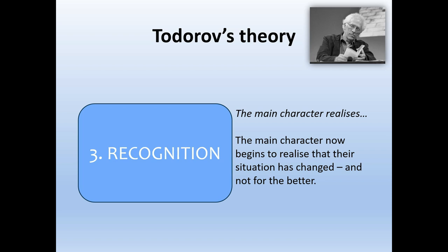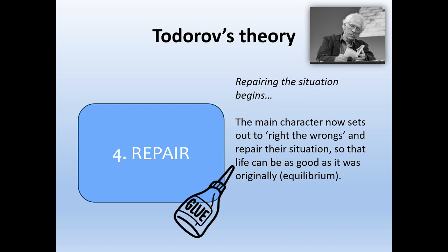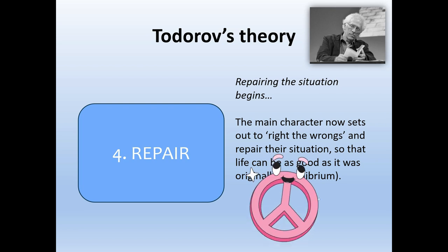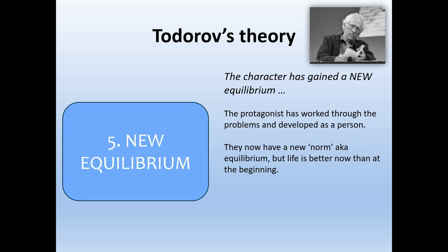The fourth stage of Todorov's theory is the repair phase, when the protagonist tries to repair the issues that came from the disruption to their previous equilibrium — setting right any wrongs and trying to restore the balance and harmony that existed at the start of the narrative. The fifth and final stage is a new equilibrium. The protagonist has worked through their problems, changed and grown as a person, and established a new norm where life is better than at the beginning.